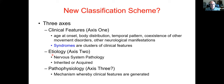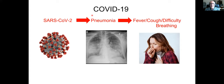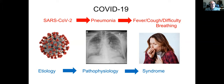Let me explain the difference between these three different things by comparing it to another disease — COVID-19. One understands that there's a virus, SARS-CoV-2, that can cause pneumonia, which can potentially lead to fever, cough, and difficulty breathing. Of course, SARS-CoV-2 doesn't necessarily lead to pneumonia — many cases are mild, asymptomatic, or just cause a URI. And there could be different types of pneumonia leading to different syndromes. So the virus is the etiology, the pneumonia is the pathophysiology, and the collection of symptoms would be the syndrome.